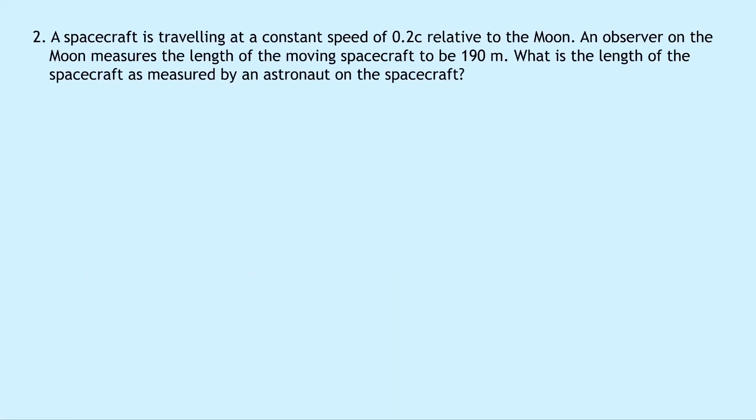Question 2 says that a spacecraft is traveling at a constant speed of 0.2 times the speed of light relative to the moon. An observer on the moon measures the length of the moving spacecraft to be 190 meters.